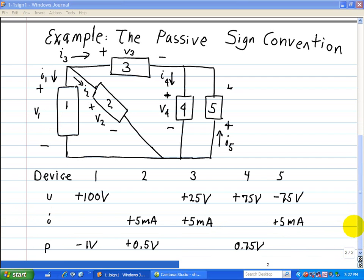Now that we got our circuit labeled with the current direction and the polarities of the voltage, let's do some numerical analysis associated with this circuit. So here we have devices 1, 2, 3, 4, and 5, and we'll go through each of those ones.